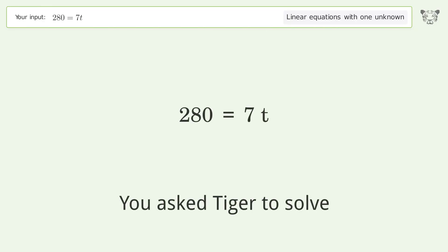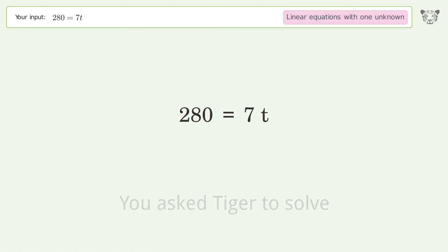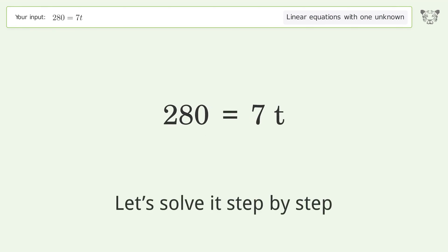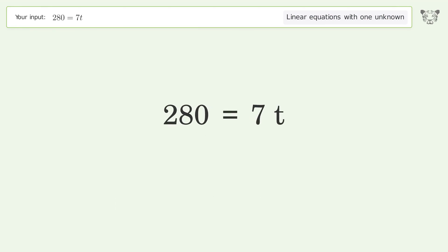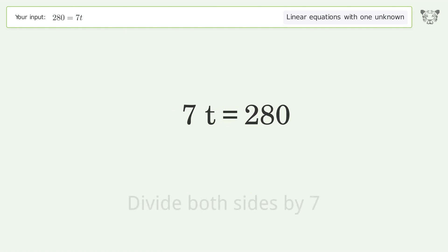We asked Tiger to solve this — it deals with linear equations with one unknown, and the final result is t equals 40. Let's solve it step by step. First, swap sides. Then isolate t by dividing both sides by 7.